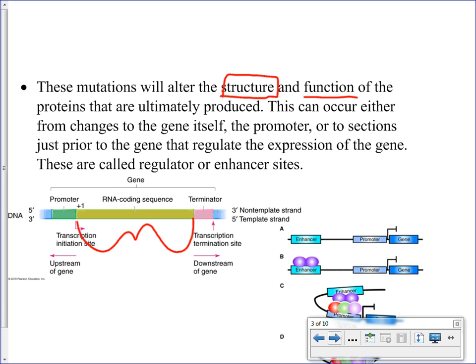Right in front of each gene there is a promoter region that RNA polymerase has to attach to. If there is a mutation to this promoter region, the RNA polymerase may never attach and the information in the DNA will not be read at all. There are also regulator and enhancer regions that control when a gene is expressed. A mutation to these regions could mean that correct gene information is never used, even if the promoter is intact.